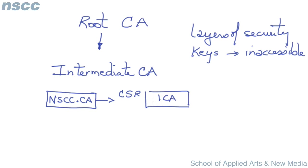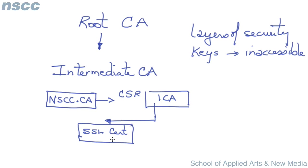What happens is an ICA can actually issue a chain of certificates to NSCC. So we'll get our SSL certificate, and that certificate will be signed by the ICA. But we'll also get another certificate — an ICA certificate from that company itself, which is also signed by a CA.